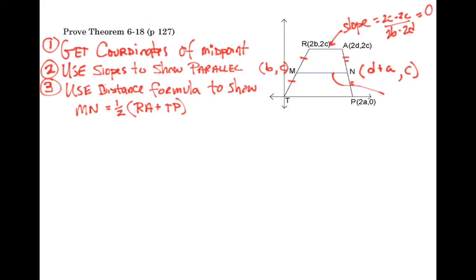2c, 2c, the rise becomes 0. This one has a rise of 0 as well. That one has a rise of 0, so they are all parallel. That's the first piece: the mid-segment is parallel to the bases.